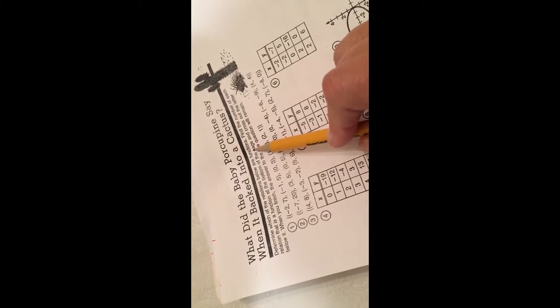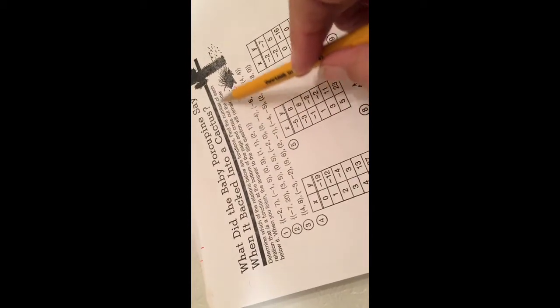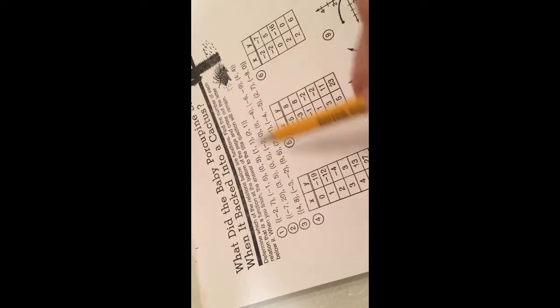Remember, by definition a function must either pass the vertical line test or X cannot repeat. Find the number of each relation that is a function at the bottom of the page and cross out the letter below. When you finish, the answer to the title question will remain.